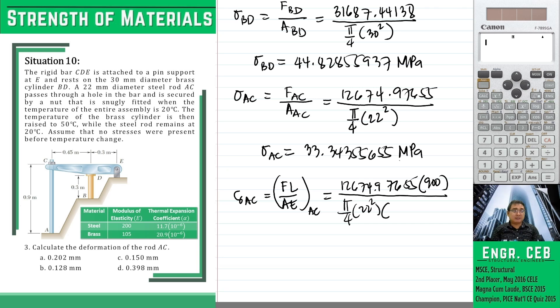Rod ac is steel. Therefore, the modulus of elasticity is 200,000 megapascals. Therefore, the deformation in rod ac equals 0.1500460045 millimeters. Okay. And that is letter c. Thank you.